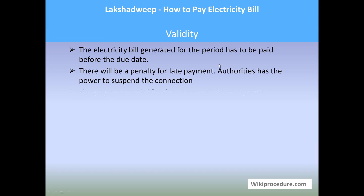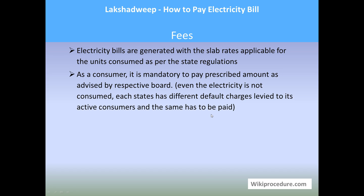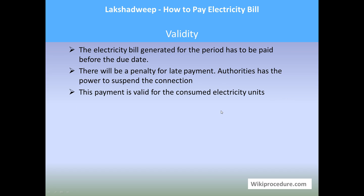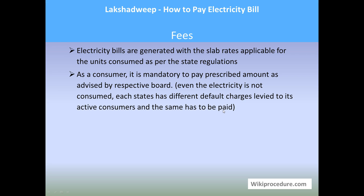Validity: the electricity bill generated for the period has to be paid before the due date, because it is generated for the consumed energy. There will be a penalty for late payment, and authorities even have the right to suspend the connection. The payment is valid for the consumed electricity units. Fees: electricity bills are generated with the slab rates applicable for the respective state as per the board. As a consumer, it is mandatory to pay the prescribed amount as per the bill.